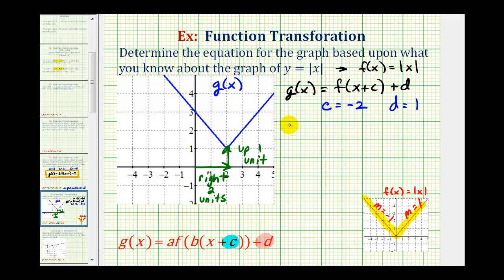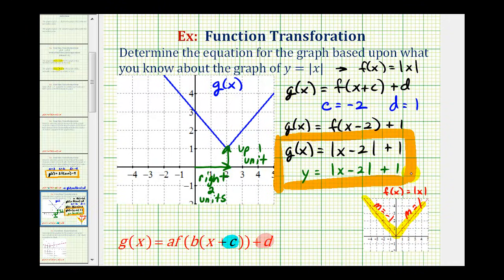Which means we can write g of x as g of x equals f of the quantity x minus two. Notice how we don't put plus negative two, we just put minus two. And then since d is positive one, we have plus one. And since f of x is the basic absolute value function, we can say g of x is equal to the absolute value of x minus two plus one. Of course, if we prefer, we can replace g of x with y. This is the same as y equals the absolute value of x minus two plus one.